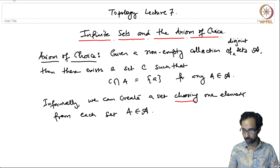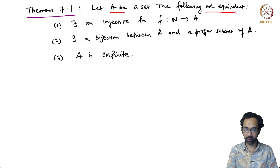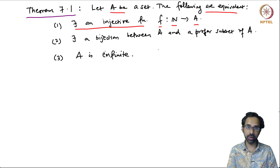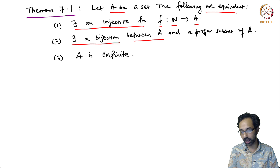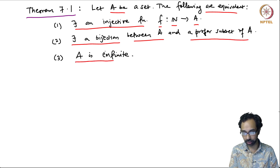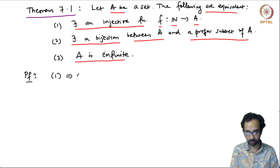What is the relation with infinite sets? Here is our main theorem. It says that if A is a set, then the following statements are equivalent: first, there exists an injective function F from the natural numbers to A; second, there exists a bijection between A and a proper subset of A; and third, A is infinite. We will prove 1 implies 2 implies 3 implies 1.